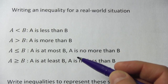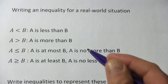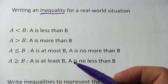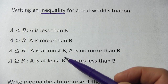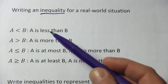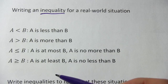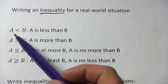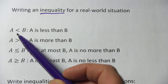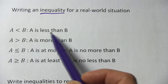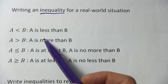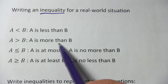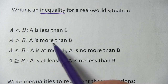Here we're going to take some word problems and try to translate them into inequalities. That can be a little bit tricky because for some of these inequalities there's more than one way to phrase them. A is less than B is pretty straightforward — that's pretty much how you'll see it written. A is greater than B you might see written as 'more than,' but that's pretty close.